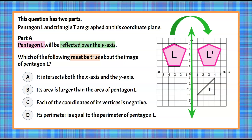Let's go check our answer choices. Choice A says it intersects both the x and y-axis. Well, we can see clearly that this image is not intersecting either. It's in the first quadrant all by itself — it doesn't touch or intersect the y-axis or the x-axis. So this is not true. Choice B says its area is larger than the area of pentagon L. We know this is not true because in order for it to be a reflection it needs to be the same size and shape. So it is clearly not B.